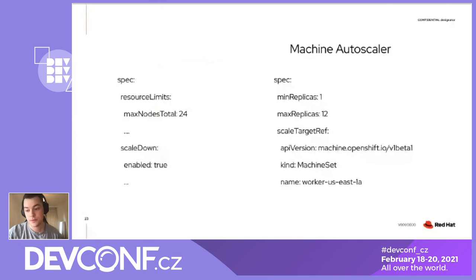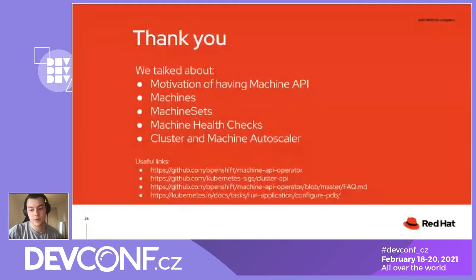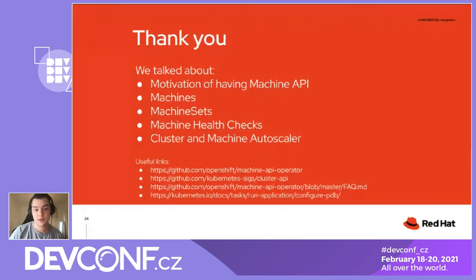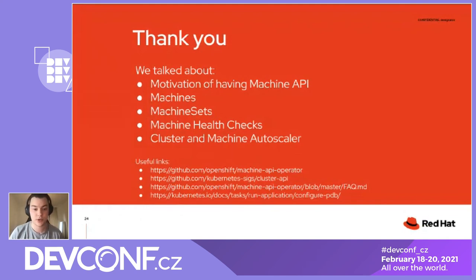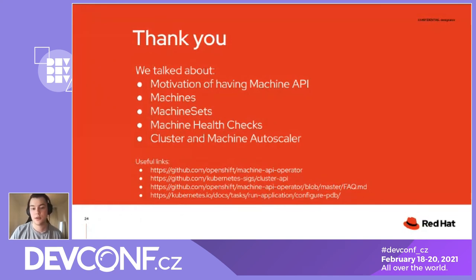Okay, thank you all for listening. Today we talked about the motivation of having Machine API, about machines, machine sets, machine health checks, and cluster autoscaler. There are some useful links — I will try to attach the presentation somewhere in case you want to take a closer look, and let's see if we have any questions.